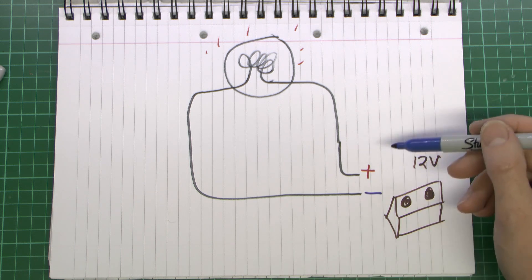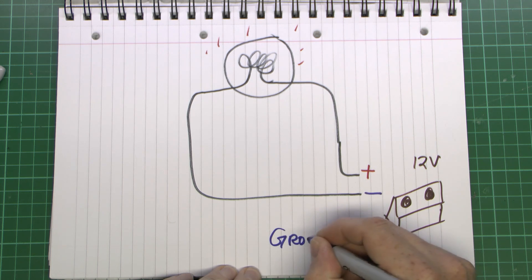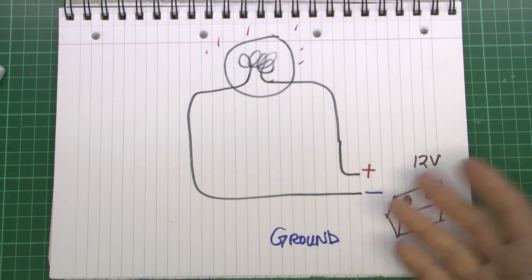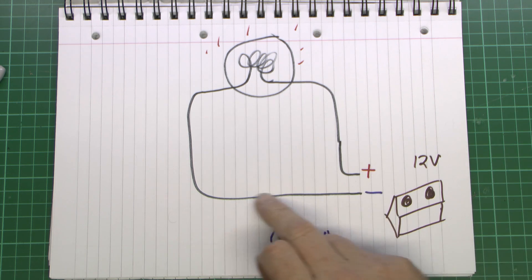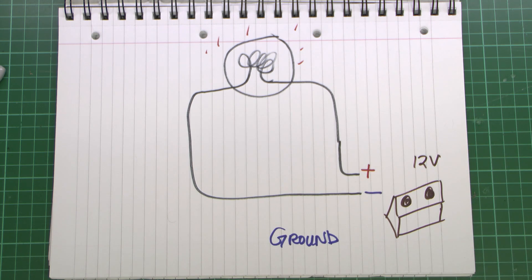Now in this system we've got positive and negative, but you'll notice there's something that's missing here, there's no ground involved here. Because this system is currently isolated, it's just sitting there on its own, there's no connection to anything else. So unless you actually came in contact with one of the wires here, then nothing's actually going to happen whatsoever.